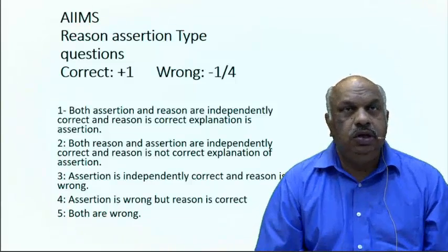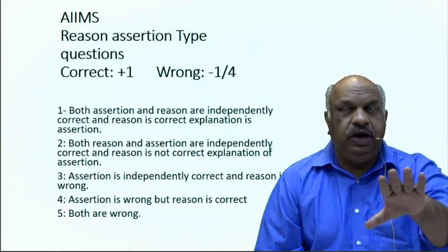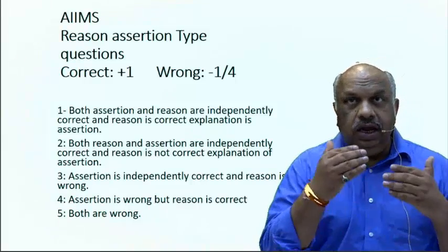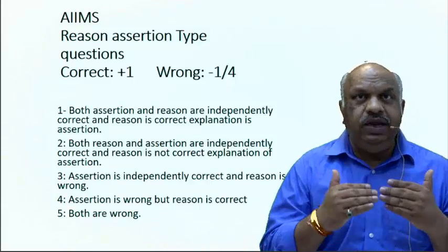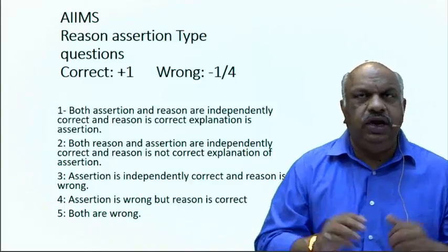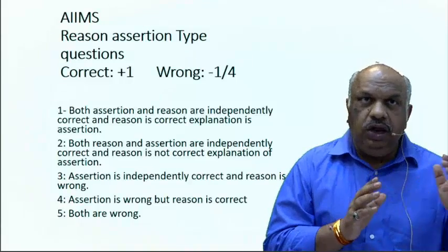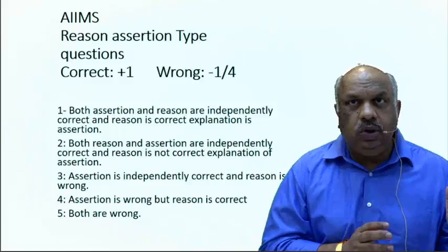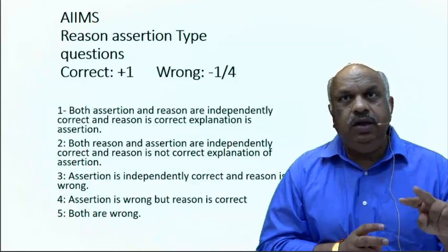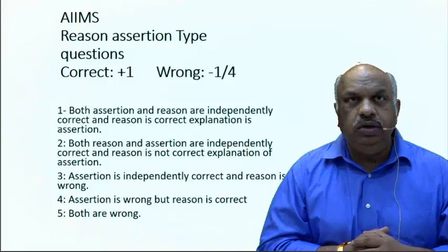In assertion-reasoning questions there are five options, though AIIMS may change this to four. The options are: one — both assertion (A) and reason (B) are correct and B explains A; two — both A and B are correct but independent, B does not explain A; three — only A is correct and B is wrong; four — A is wrong and B is correct; five — both A and B are wrong.